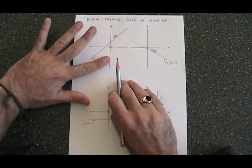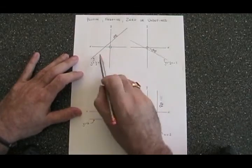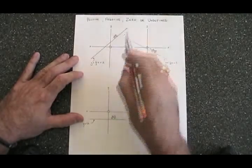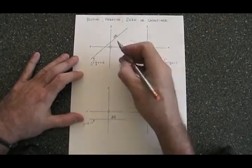But what if I don't know the equation? What I do is I imagine myself riding a bike along the line from left to right. If I am riding uphill, then it means I have a positive slope.